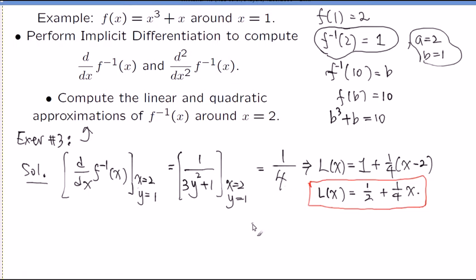Therefore, is the b value there, 1 plus derivative of that x value, x equals 2, which happened to be using just y value, which is one-fourth, times x minus a, which is 2. In expanded form, one-half plus one-fourth x.